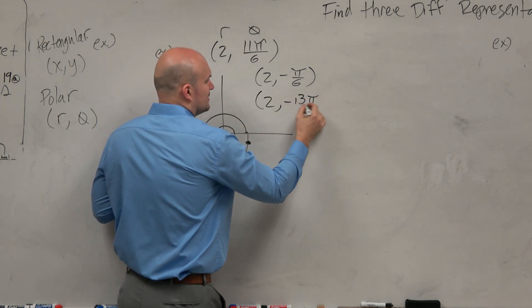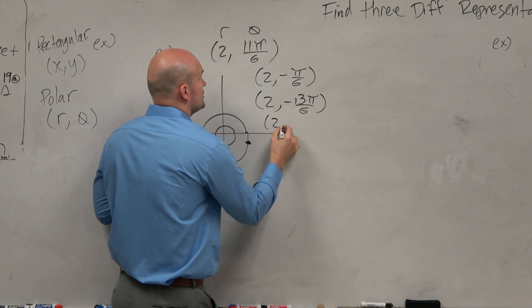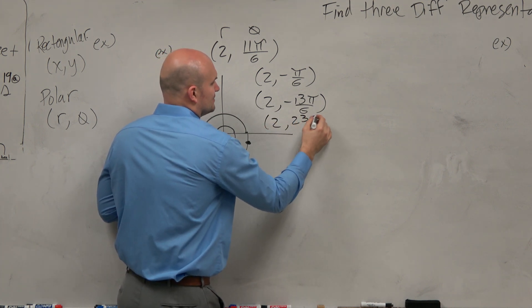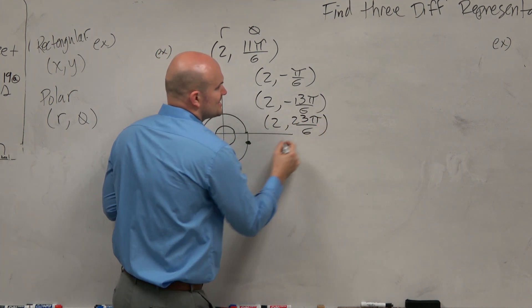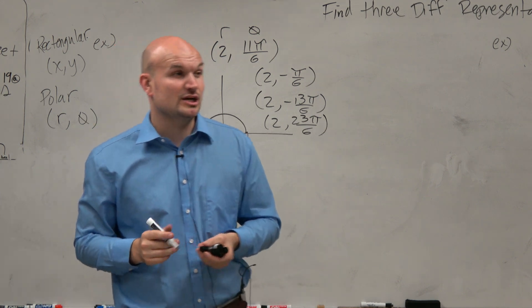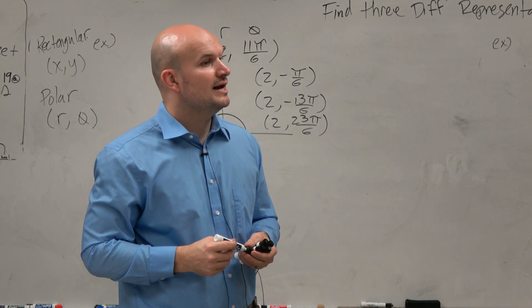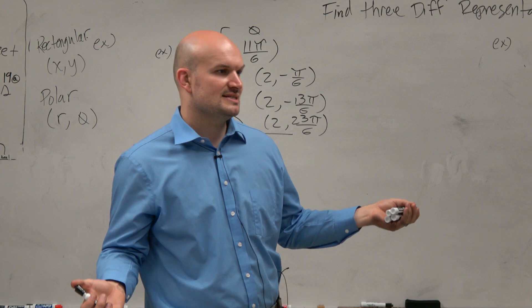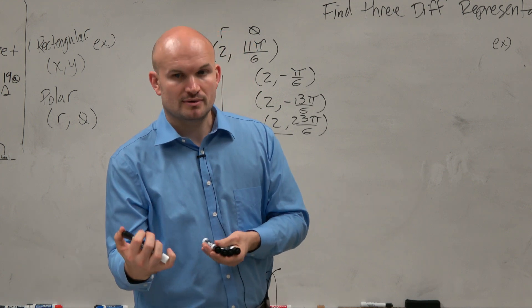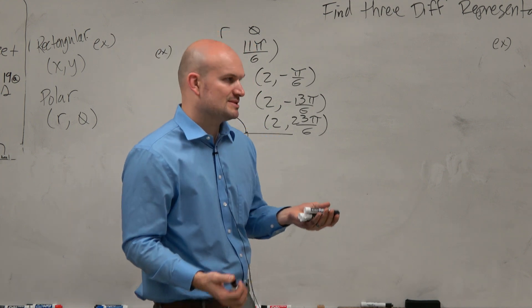We could do 2, 23π over 6. I mean, the sky's the limit. So typically, this would be a great question on a multiple choice and basically saying, hey, here's these angles. Which one of these don't work, right? Or which one of these would not be a representation?